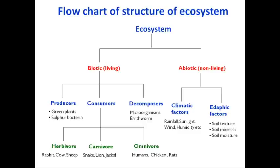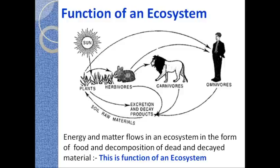Now we'll talk about the function of an ecosystem. If you look at this diagram on the screen, you can see that green plants are absorbing sunlight and synthesizing food. Part of that food is eaten by rabbits, which are called herbivores, and those rabbits are eaten by carnivores — lion in this case — as well as omnivores like human beings. You can easily see that energy and matter in the form of food is being transferred from producers to herbivores, and from herbivores to carnivores as well as omnivores.